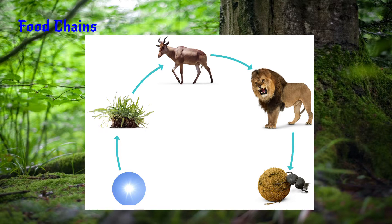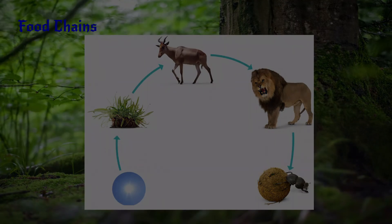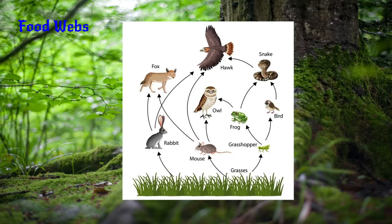Each step is about getting energy. The last one is a decomposer. This takes the animal's waste and turns it back into plants. Now here's the food web. The food web is basically what I described — like the grass, then the rabbit, then the hawk, or it could be the grass, the rabbit, then the fox. That's a food chain.